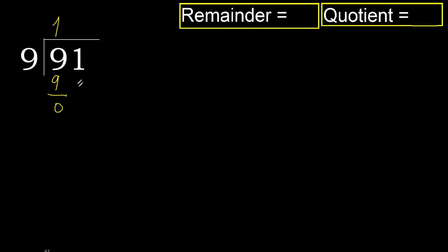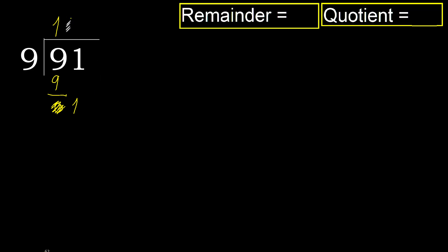Subtract 0. Eliminate 0 on this side. 1 is less, therefore next — that is not a number, therefore finish it. Complete with 0 because here finish it with this number. Result: 1, 10.